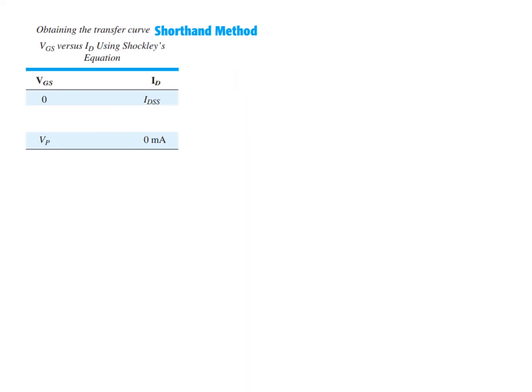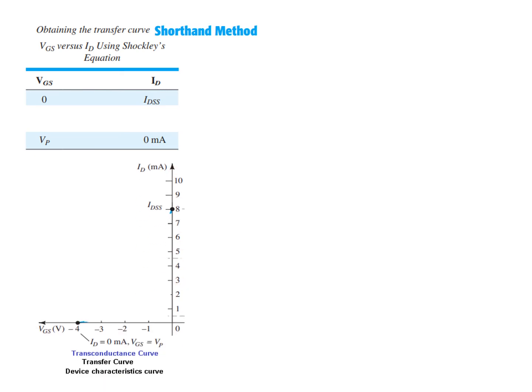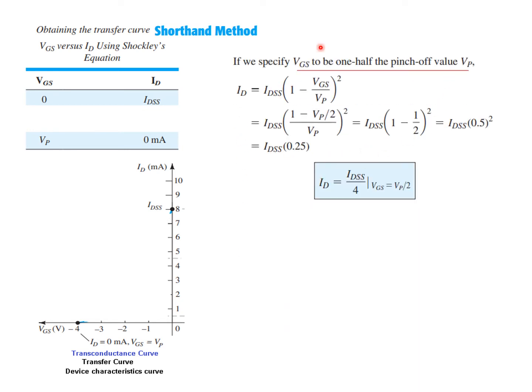There is also a shortcut method. First, we mark the two axes: the ID axis and the VG axis. The first point is when VG is 0 — ID will be IDSS, so we mark that. The second point is when ID is 0, then VGS equals VP, which is −4 in this case. We mark these two points.